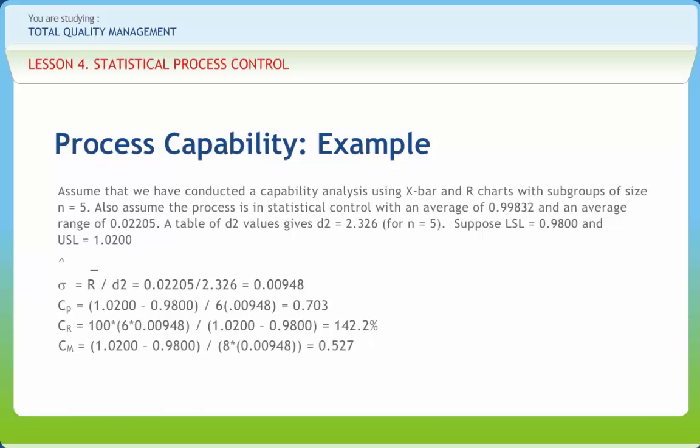Cm equals 0.527. Being less than 1.33, this implies that if we are dealing with a machine, that would be incapable of meeting requirements.